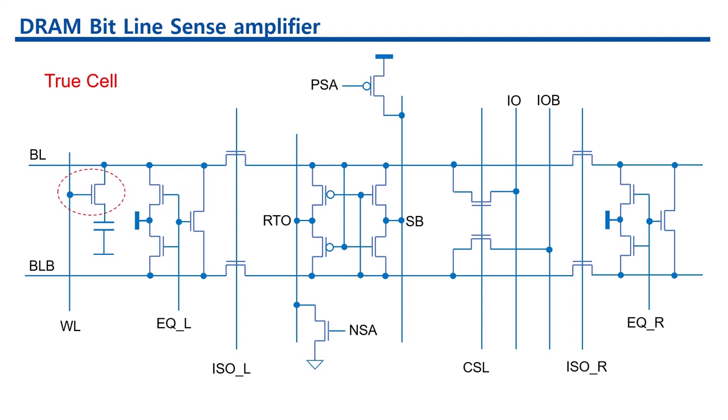DRAM BitLine Sense Amplifier consists of cross-coupled latches and equalization transistors. For the folded BitLine scheme, ISO transistors are also needed.